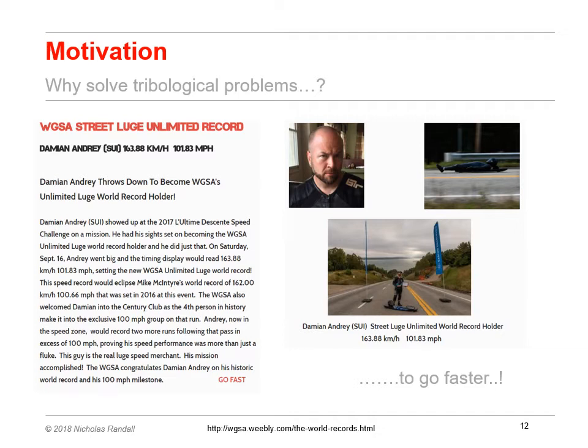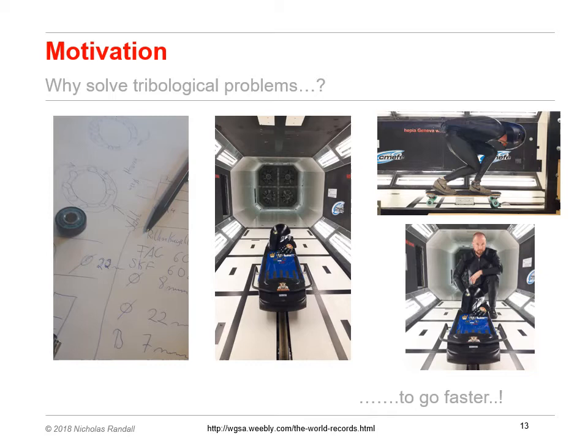Let's look at some modern examples of why we want to solve tribological problems. This is a friend of mine, Damien André, who holds the current world speed record for Street Luge. Although he has already achieved over 100 miles per hour, he always wants to go just that little bit faster. One way to do this is to simulate the aerodynamics in a wind tunnel, which allows the shape of the luge to be optimized, as well as the helmet and clothing. Another avenue is experimenting with different bearings and lubricants.